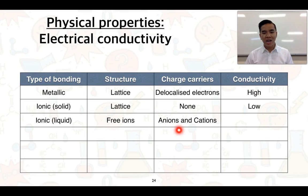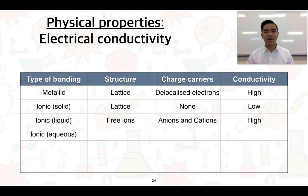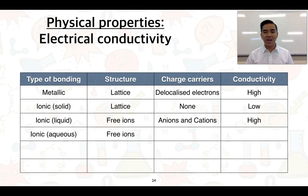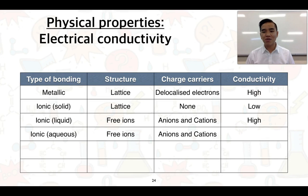The negatively charged ions are called anions, and the positively charged ions are called cations. With this freely moving charge, we can get electrical conductivity. The final case for ionic compounds is if it's in aqueous solution — meaning it is dissolved in water. Water can be an effective solvent and can dissolve ionic compounds. We still have freely moving ions — both anions and cations — so we would again expect high conductivity.